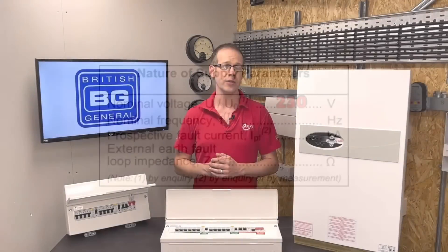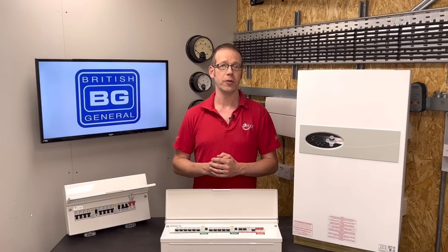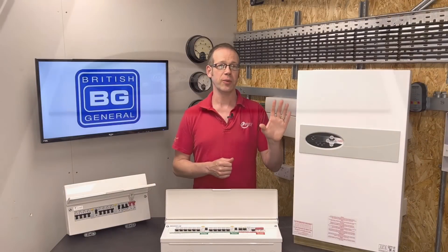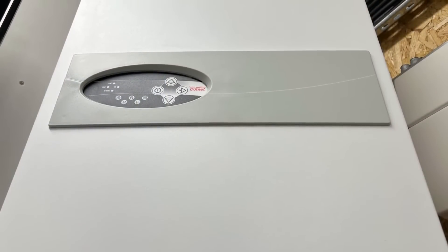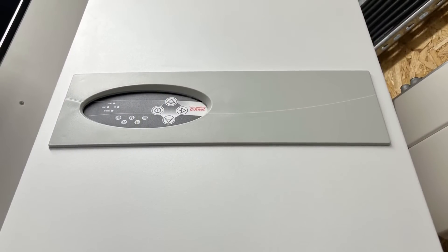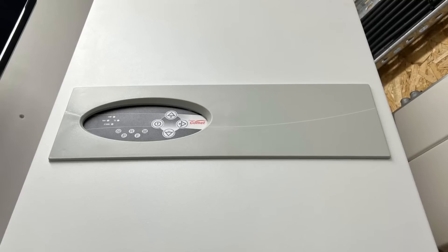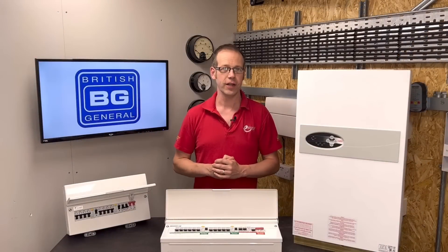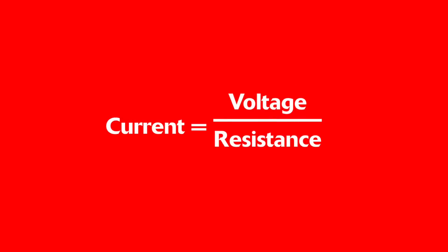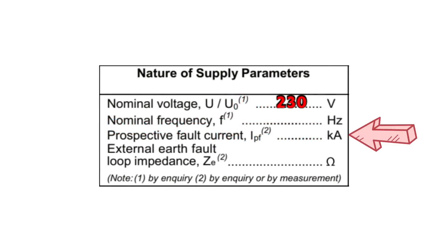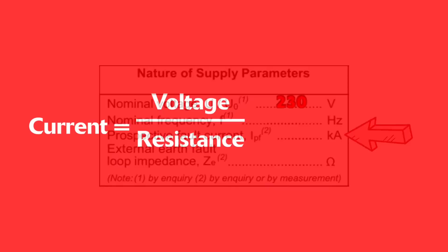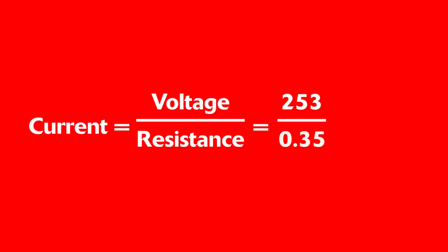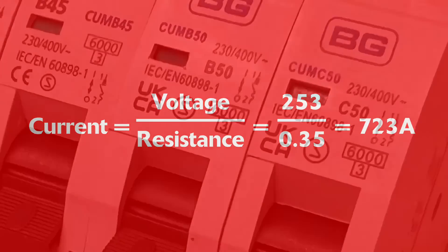We're going to find as we progress through this training course that this particular situation — designing a circuit for this boiler — throws up an interesting challenge when it comes to using 230 volts in our design current calculation. Beyond that, in a future video we could use Ohm's Law to calculate the prospective fault current. If we use the very highest voltage of 253 volts and the lowest maximum Ze at 0.35 ohms, we would find a fault current of around 723 amps.